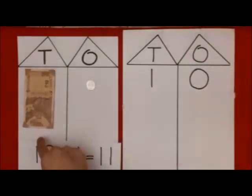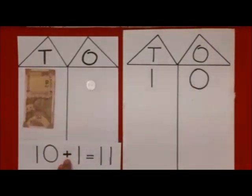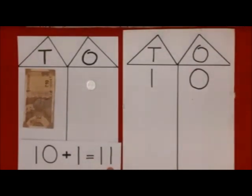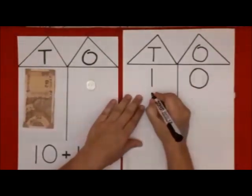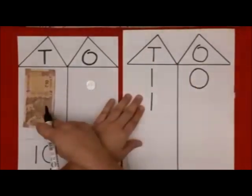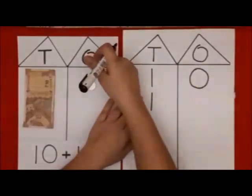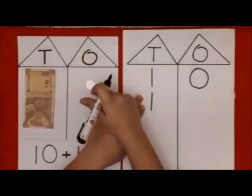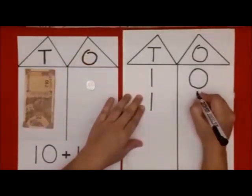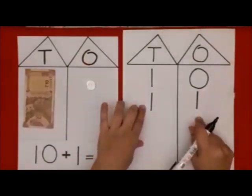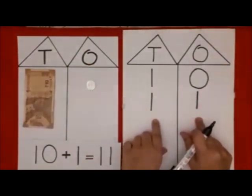1 ten in 10's house, and — not plus — 1 extra, 1 in 1's house, is number 11. So easy! How will Anubha Ma'am write it? 1 ten in tens house, and 1 extra in 1's house — 1 ten and 1 extra is number 11. Did you get it? Good.